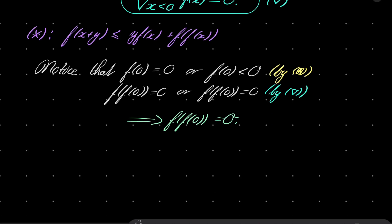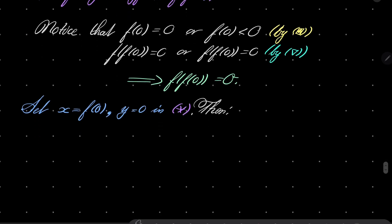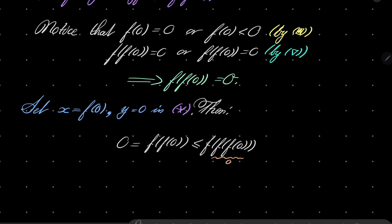Now let's take our functional inequality and set x to be f of zero and y to be zero in condition asterisk. Then on the left hand side we have f of f of zero, which is less than or equal to f of f of f of zero — three applications. But we know f of f of zero is zero, and the argument of the outermost f here is zero, so f of f of f of zero equals f of zero.